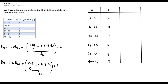Next we need the class boundaries and cumulative frequencies. For class boundaries, we subtract 0.5 from the lower class limits and add 0.5 to the upper class limits. So for the first class 10 to 15: 10 − 0.5 = 9.5 and 15 + 0.5 = 15.5. For the next class: 16 − 0.5 = 15.5 and 21 + 0.5 = 21.5, and so on for the remaining classes.